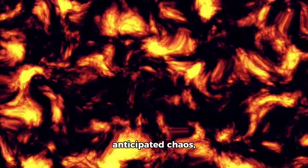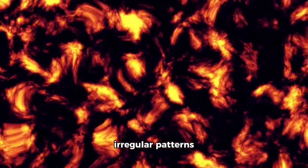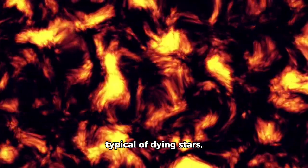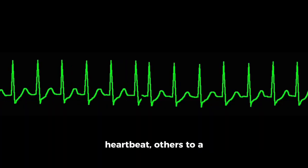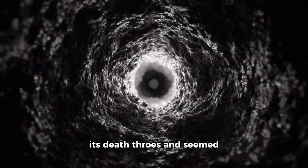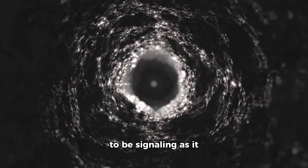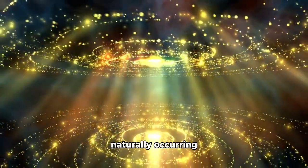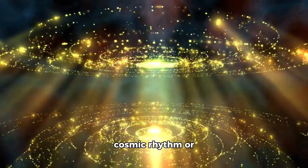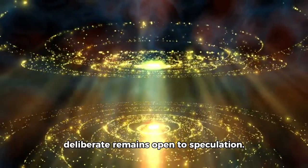Astrophysicists had anticipated chaos, irregular patterns typical of dying stars, but this one was eerily ordered. Some compared it to a heartbeat, others to a coded transmission. The star had entered its death throes and seemed to be signaling as it turned into a black hole.